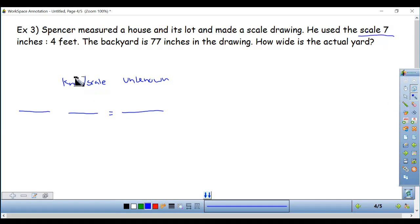Scale seven inches is four feet. That's what I'm going to put. Seven inches is four feet. Inches with inches. Feet with feet. Everything on top needs to be inches. Everything on the bottom needs to be feet. So the backyard is 77 inches in the drawing. So inches with inches. 77. And I'm looking for, or 77 inches. How long is the actual yard? That is my x. We do not know how many feet. That's what we're looking for.